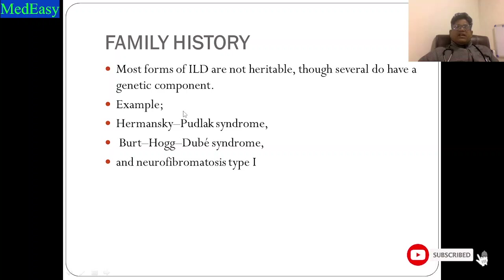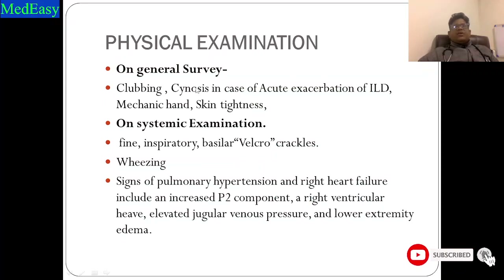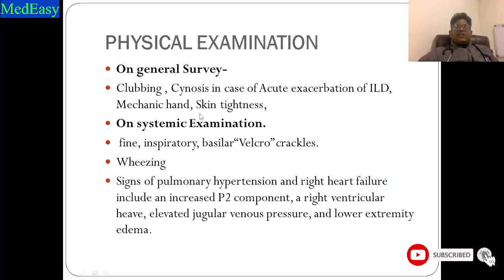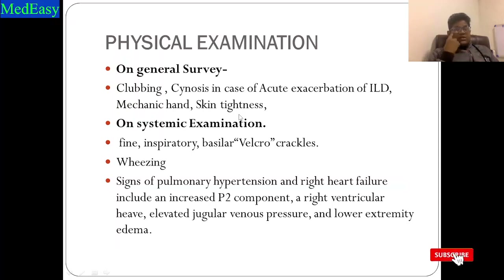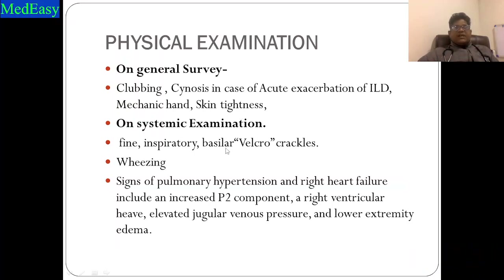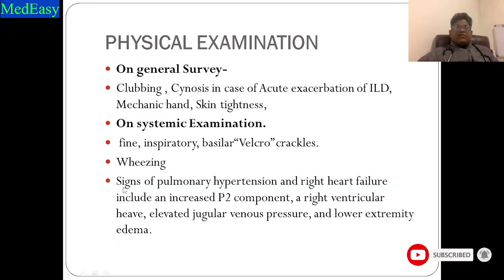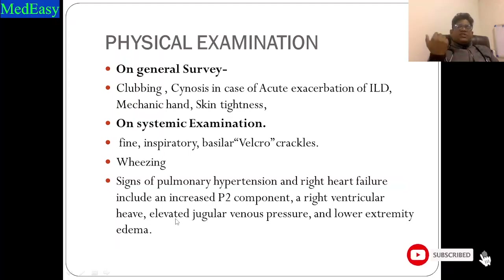Family history is important because some ILDs have a genetic component, such as Hermansky-Pudlak syndrome, Birt-Hogg-Dubé syndrome, and neurofibromatosis type 2 — these run in families. On physical exam, clubbing is a very important sign seen in the nail bed. Cyanosis may be seen in acute exacerbation of ILD. Signs of pulmonary hypertension include loud P2 component, right ventricular heave, elevated jugular venous pressure, and lower extremity edema.